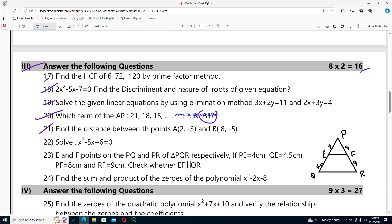Question 20: which term of AP 21, 18, 15 is -81. Question 21: find the distance between the points A(2,-3) and B(8,-5). Question 22: solve the equation x²-5x+6=0. Question 23: E and F are the points on PQ